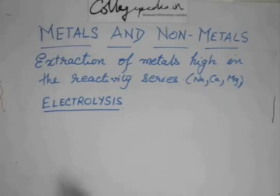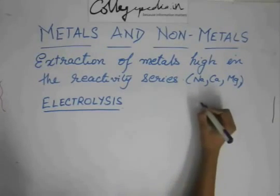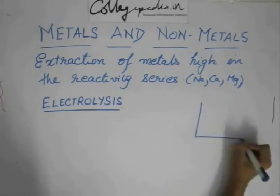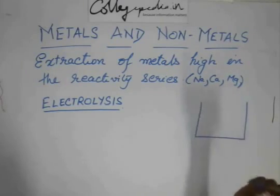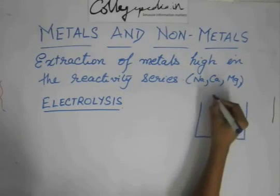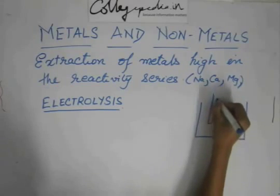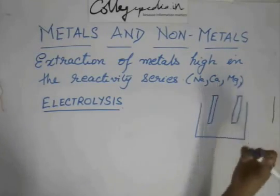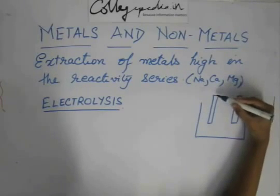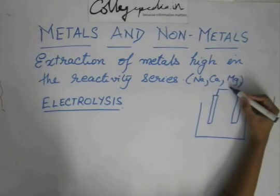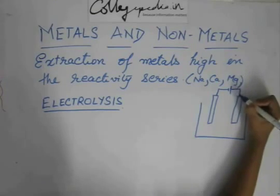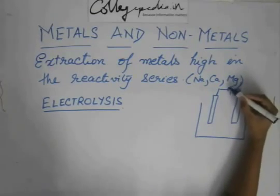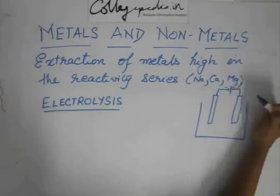Now, in electrolysis, what we do is that we have a container and we have two plates. The plates can be of anything in this case, and it is connected to a battery. This is the symbol for a battery. This is the negative terminal and this is the positive terminal.